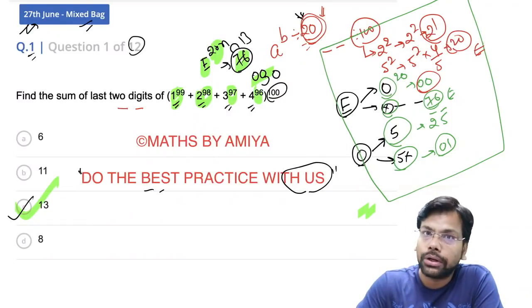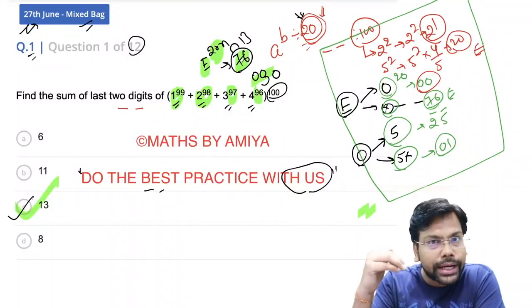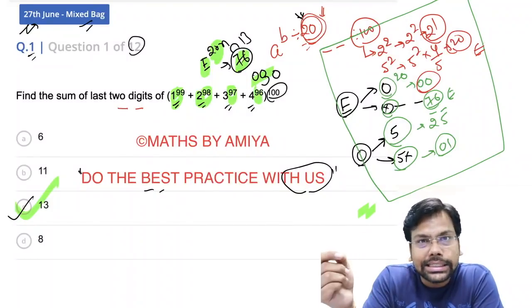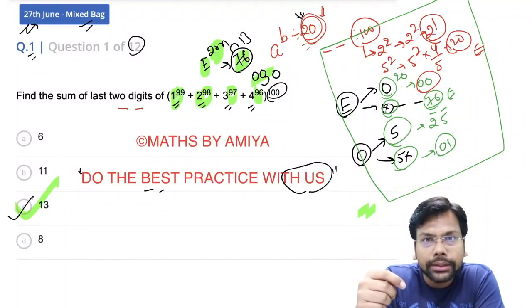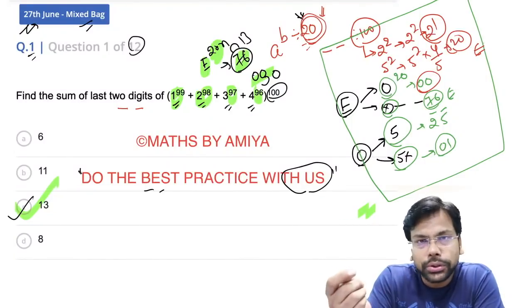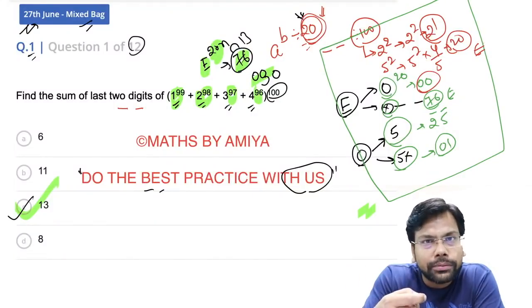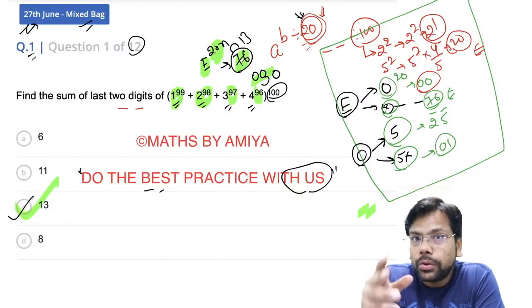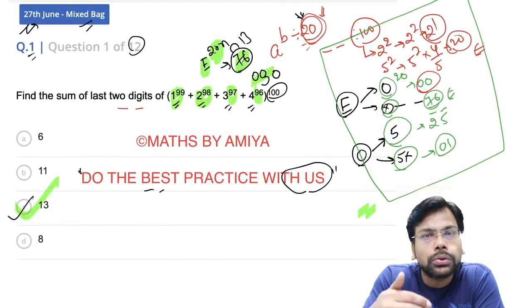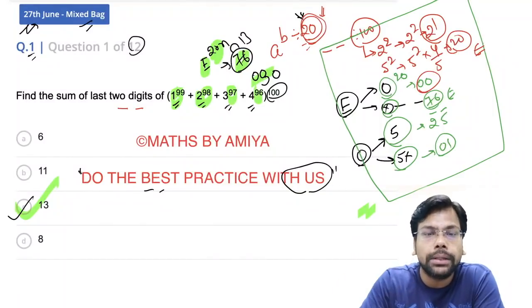If you still have any problem, please rewind the video. Note those 5 points: cyclicity is 20 for the last 2 digits. Then 00 if ending with 0 when power is 20 or 20 multiple. 25 if ending with 5. 01 if odd. 76 if even. I hope it's okay. This is all about today's learning. Please note it down so you can give your best in your examination.